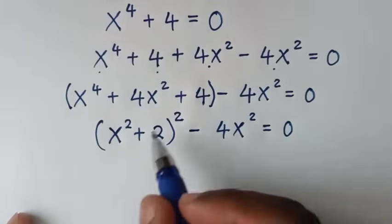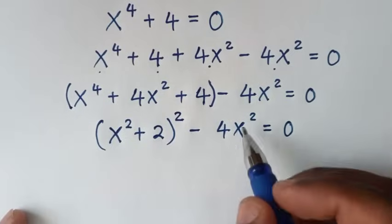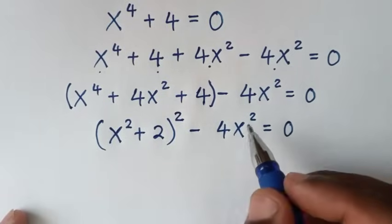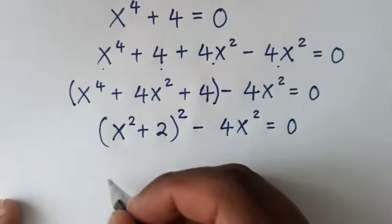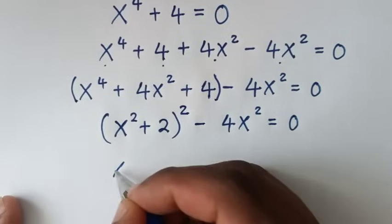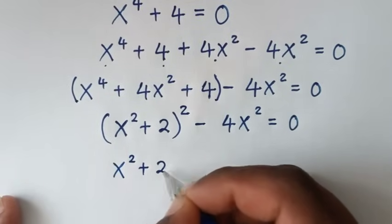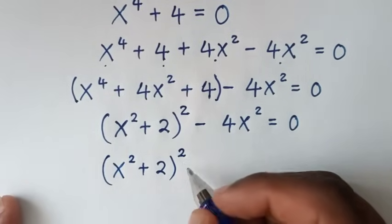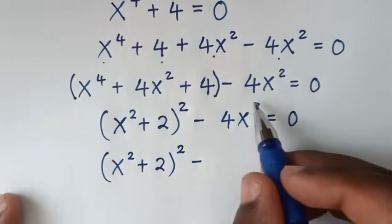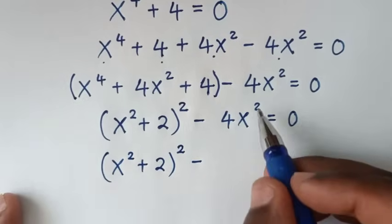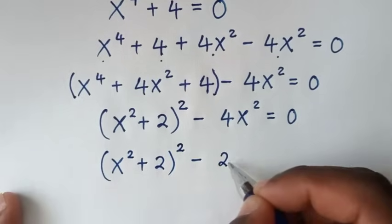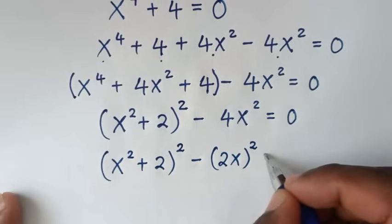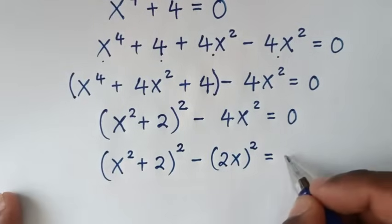Then from here, it is in square form. Now also here we'll make it in square form, so as to be in the form of a perfect square. So it will be (x² + 2)², then minus this part here — 4x² is the same as (2x)², which is equal to 0.